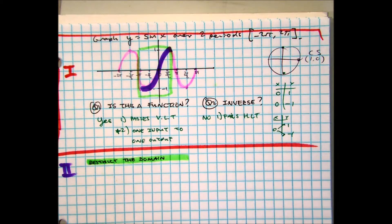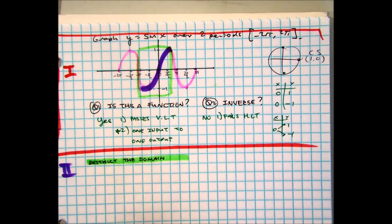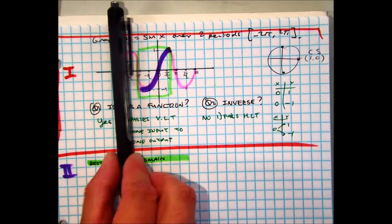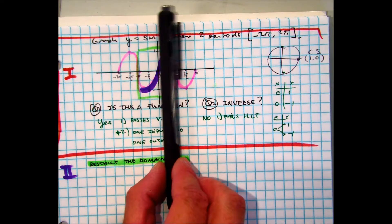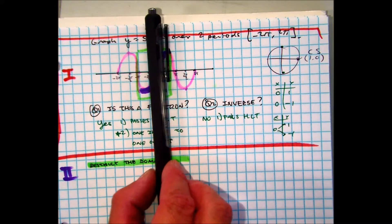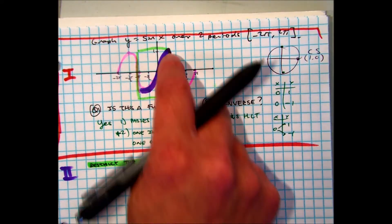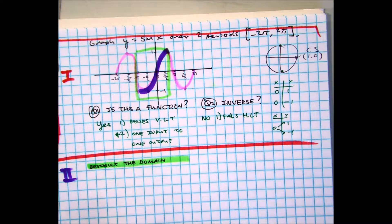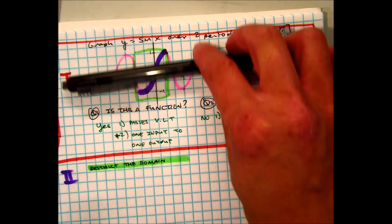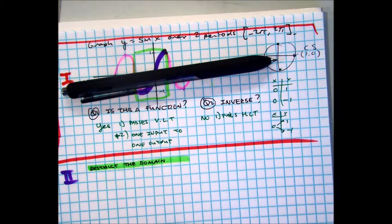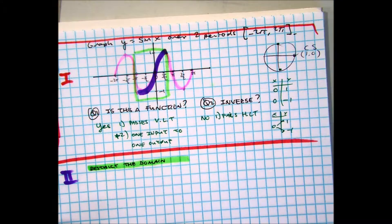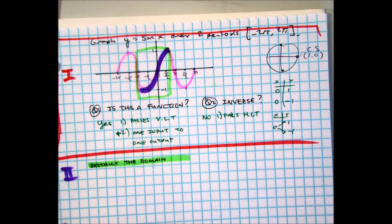Class, is this a function in purple? Why? One x value to one y value passes the vertical line test. Inside the green window, this purple graph, does it pass the horizontal line test? So that means I can take the inverse.